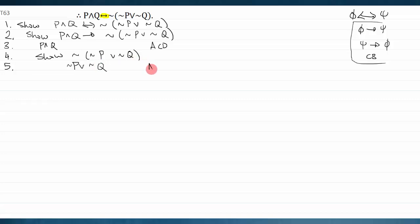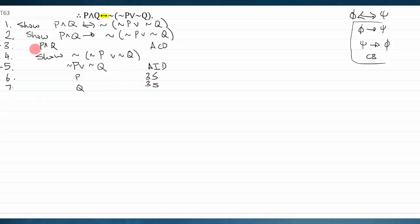Now what do I do? I can combine p or q with the assumed 'not-p or not-q' using modus tollendo ponens. I take p, double-negate it to get not-not-p, and then use MTP with 'not-p or not-q': since I don't have not-p (I have not-not-p, i.e., not one side), I can infer not-q. That's double negation followed by MTP.